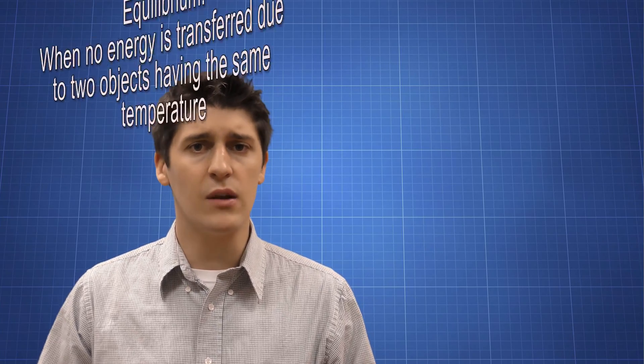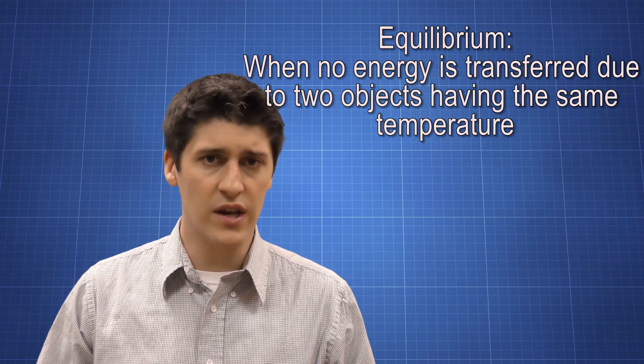Let's talk about equilibrium. Let's say I have two objects and they come into contact with each other. According to the laws of thermodynamics, those two objects will come into equilibrium, meaning that one object will lose energy and the other object will gain energy, and at some point they will have the same temperature.